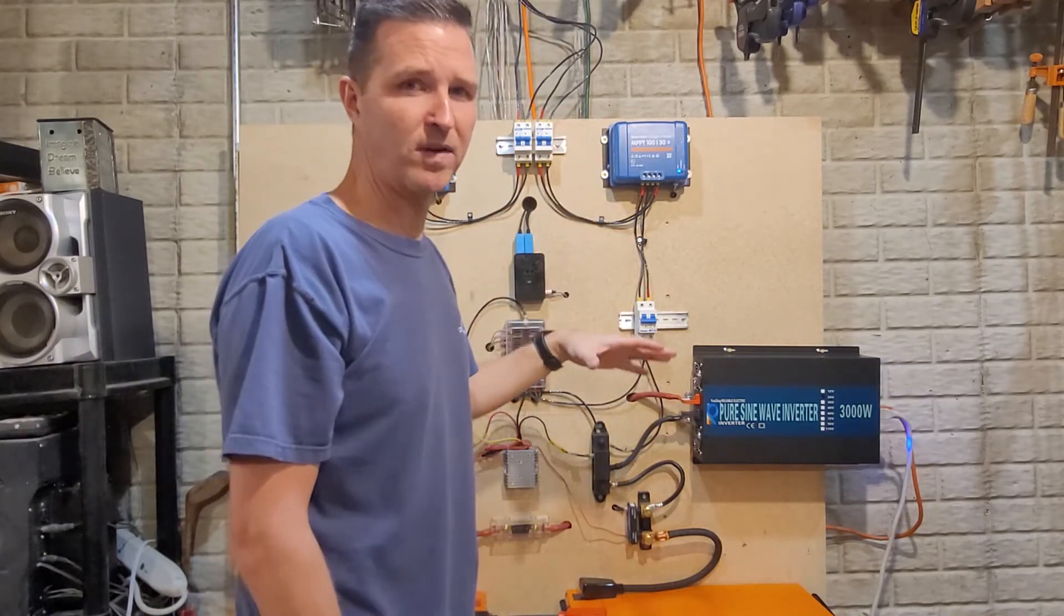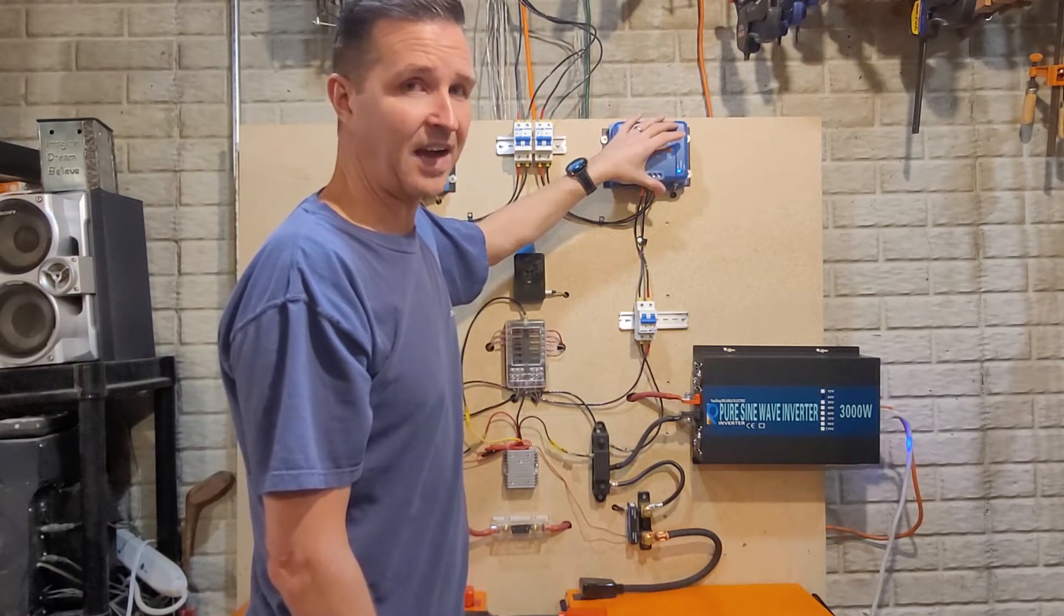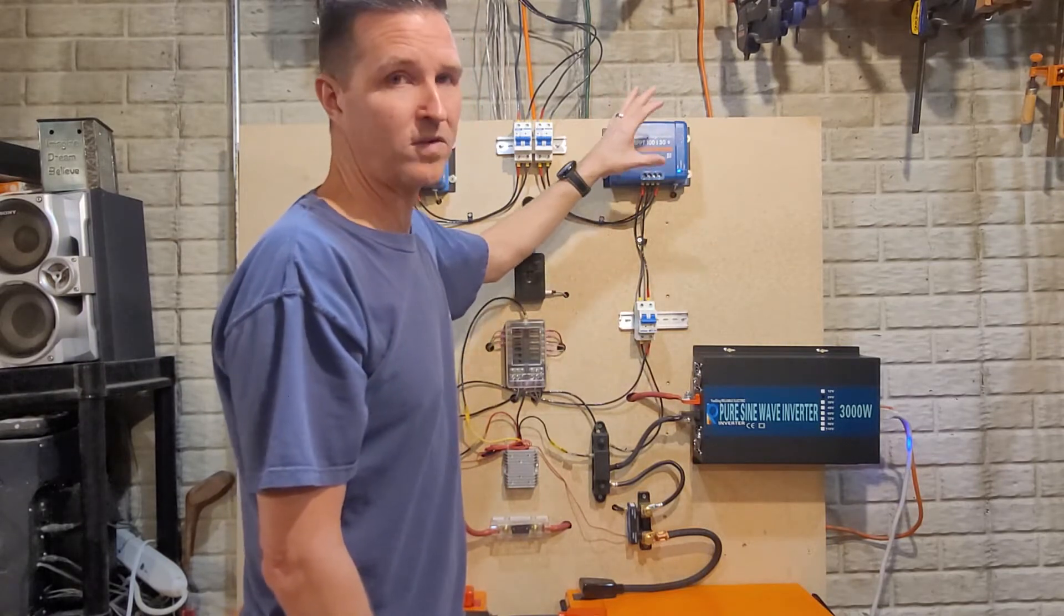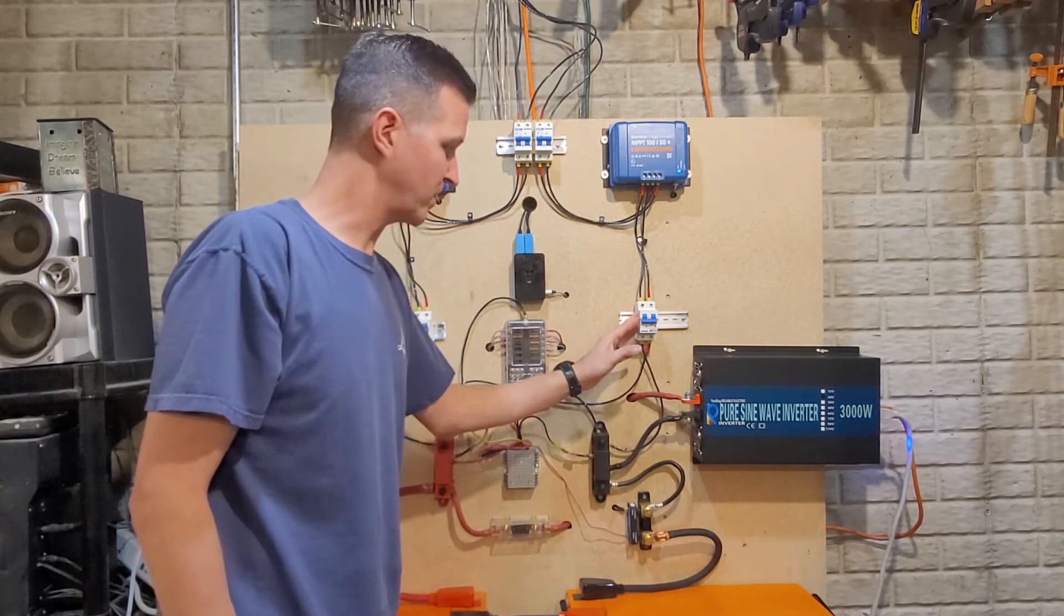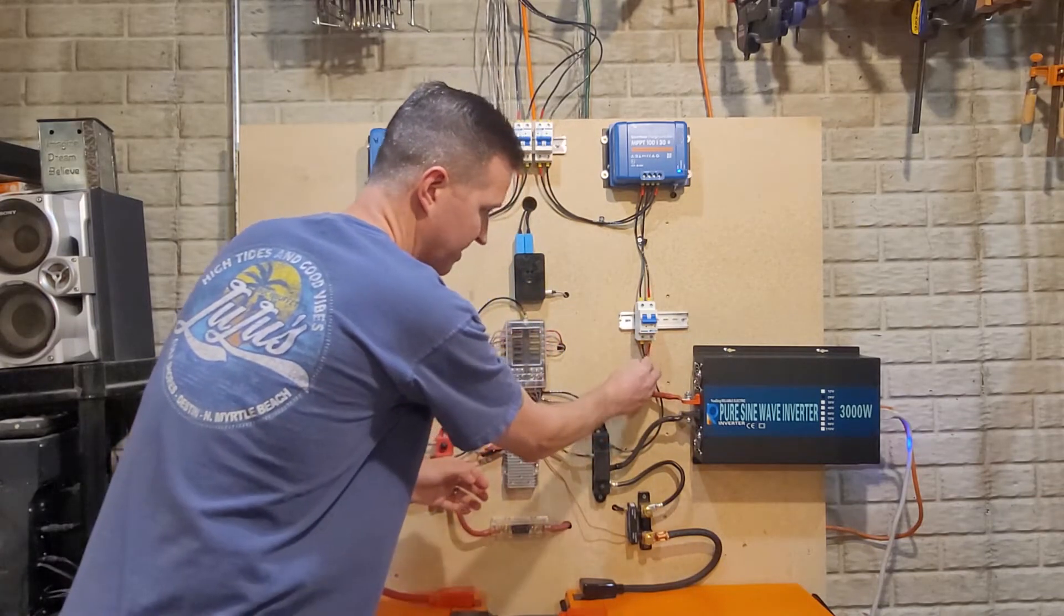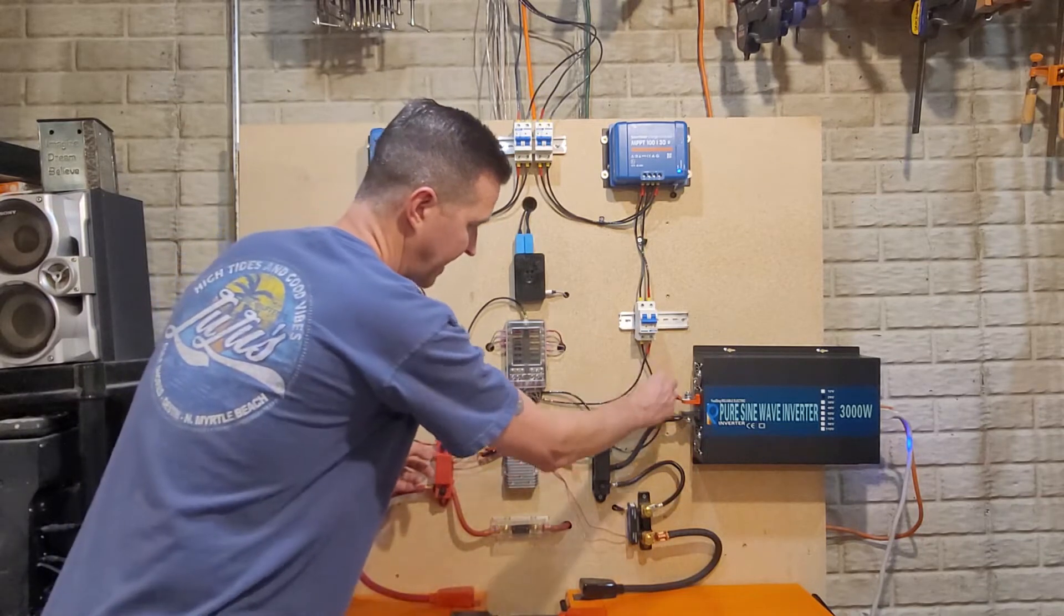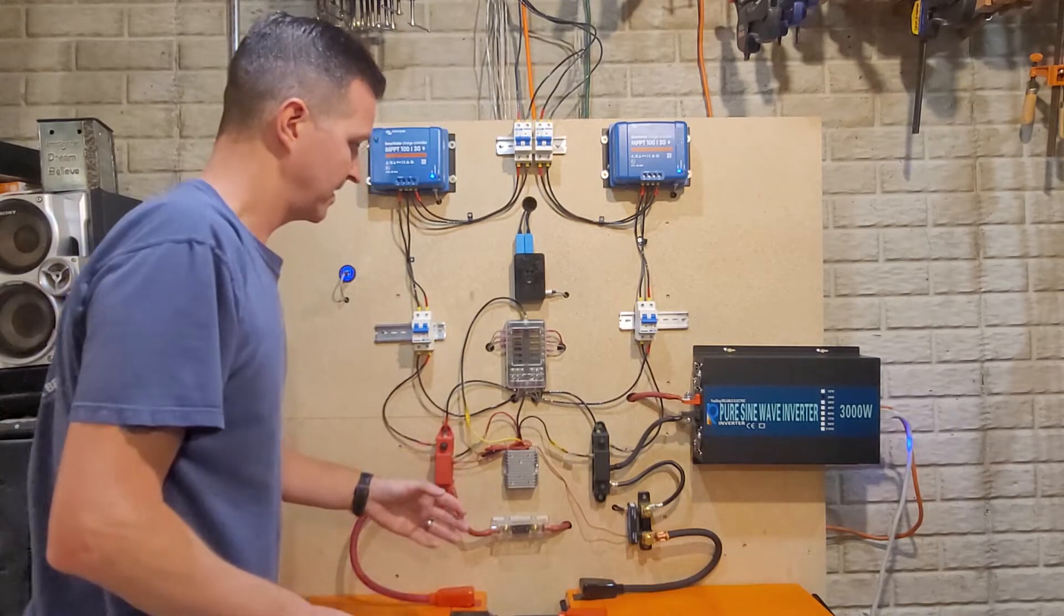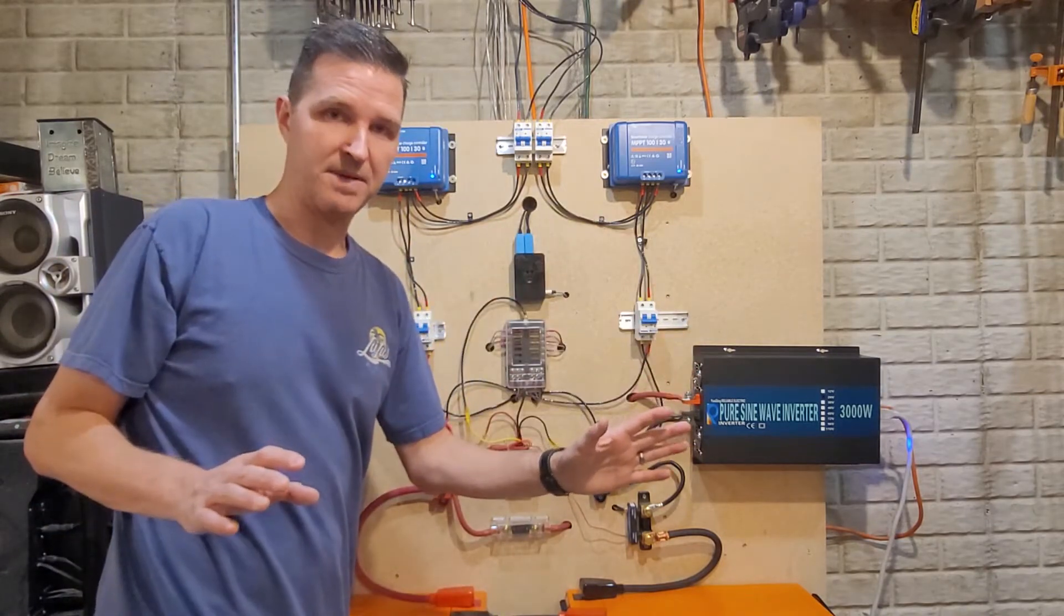My system is a 24-volt system, so it reduces it from 30 to 35 volts down to what the system can use, which is 24 to 26 volts. From there it goes to another circuit breaker and then to my positive bus bar, which is labeled here. There's also a negative that goes to my negative bus bar. From these bus bars, it distributes out through all the other equipment in my system.